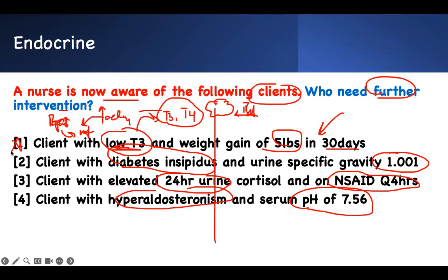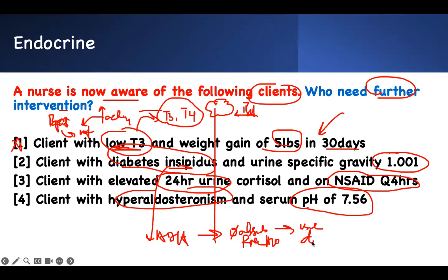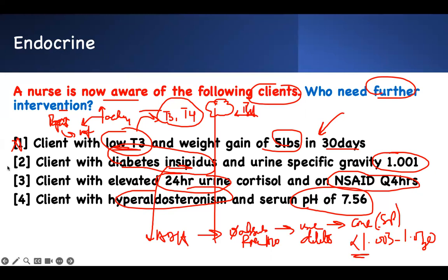Moving to diabetes insipidus: DI means you have no ADH. If you have no ADH, you cannot absorb free water. If you can't absorb free water, your urine is diluted. If your urine is diluted, the concentration — which is specific gravity — is going to be low. Normal specific gravity is 1.003 to 1.030, so a low value is expected in DI. No intervention needed.